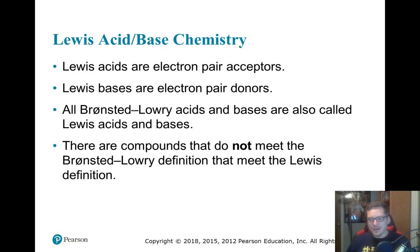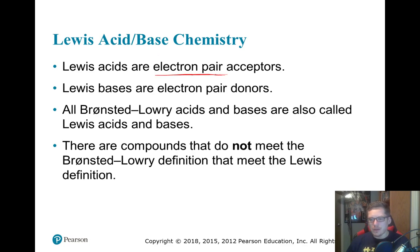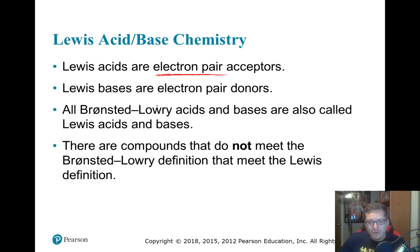Lewis decided to identify what is an acid or base by following the electron pair instead of the hydrogen or proton. This makes it more robust — it covers more definitions. An example: all Brønsted-Lowry acids are Lewis acids, but not all Lewis acids are Brønsted-Lowry acids.